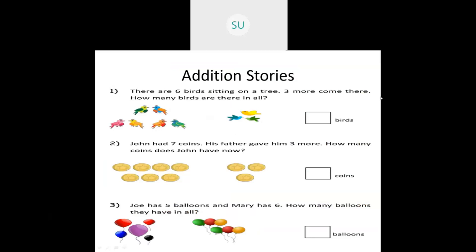First let's see one story. There are 6 birds sitting on a tree, then 3 more come. How many birds are there in all? 'In all' means you have to add. First how many birds were sitting? 6 birds. Then how many came? 3 more. So 6 plus 3 — how much is 6 plus 3? It is 9. So there are total 9 birds on the tree.